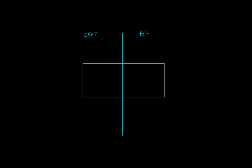What about this rectangle? In a rectangle, if this is the length and this is the breadth, and if we pass a center line dividing this rectangle into two equal halves — the left part and the right part — this is the axis of symmetry. This figure is symmetrical around this axis of symmetry, which passes exactly from the center, that is the middle point of this length of the rectangle.